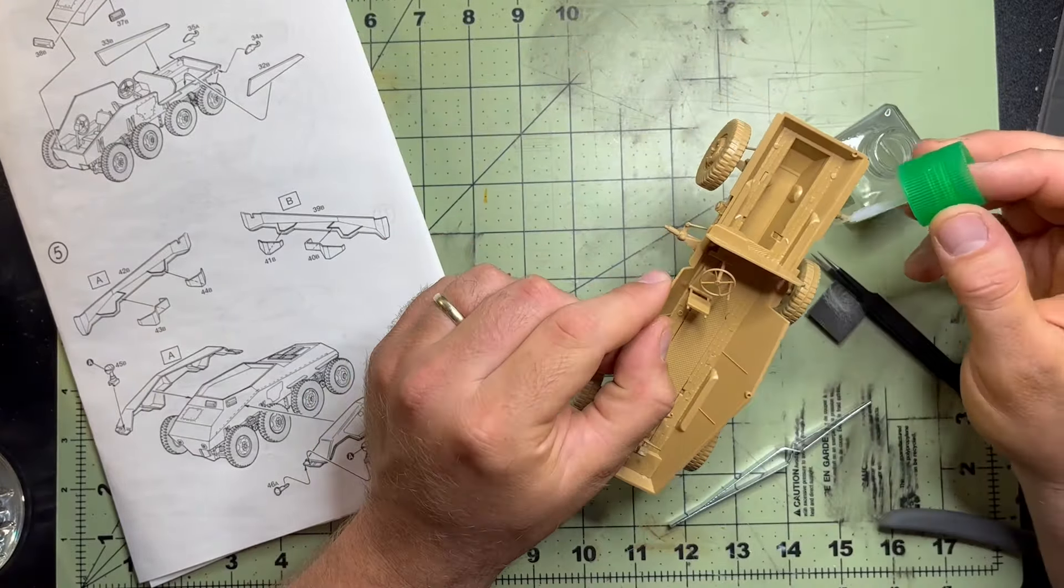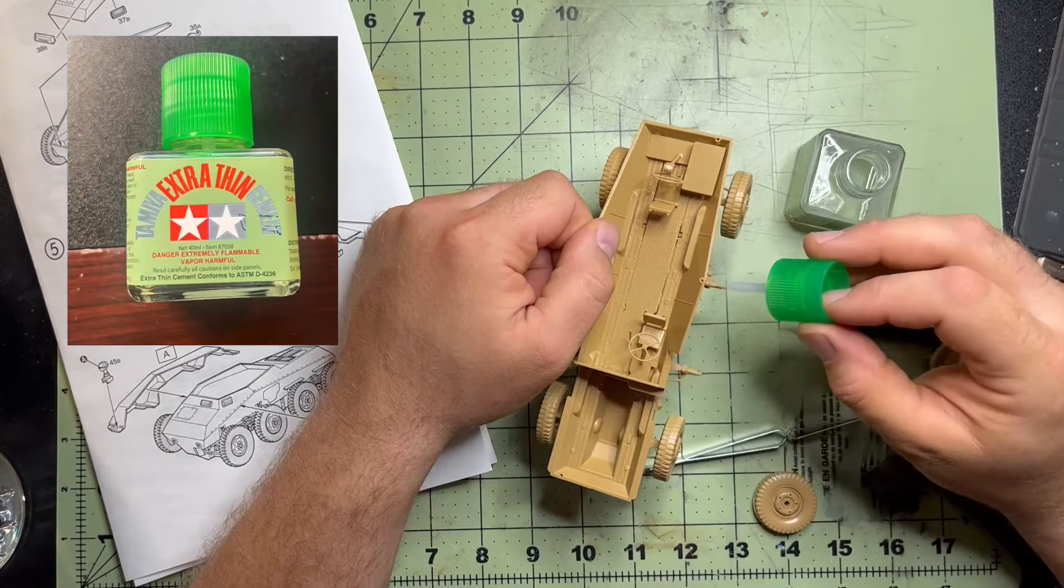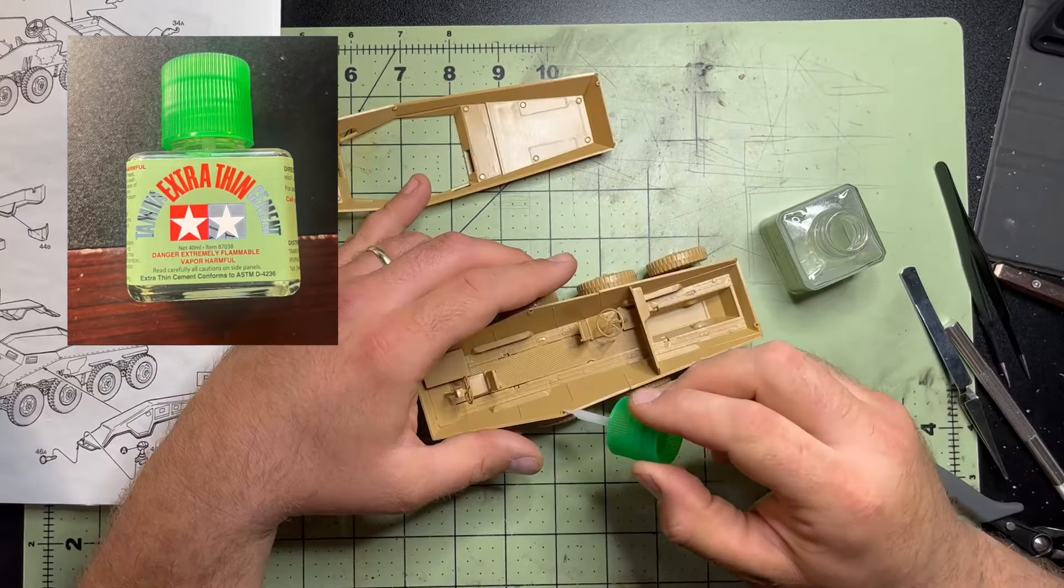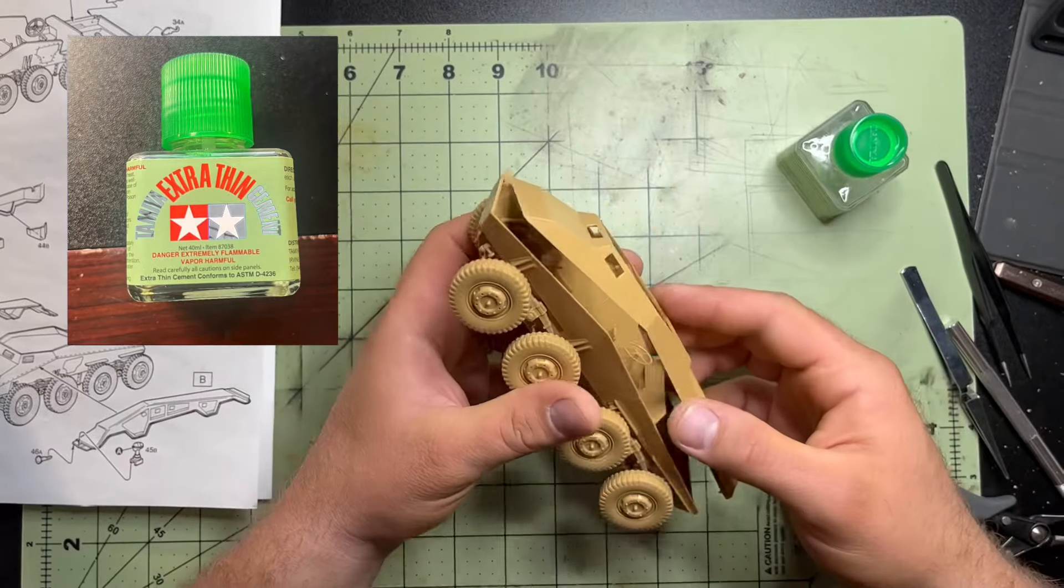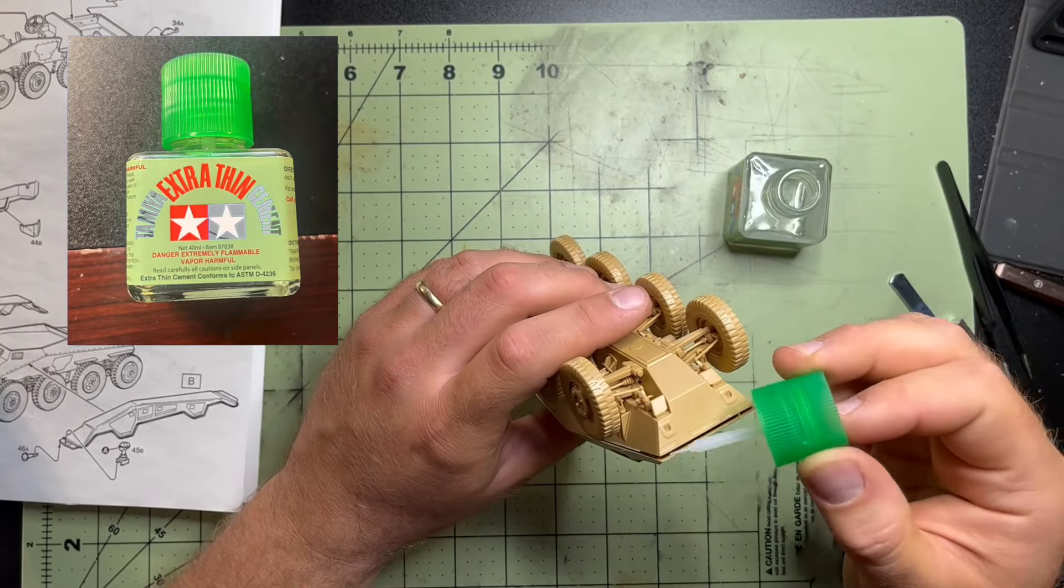I don't know what everyone's thoughts are on modeling cement, but I have always preferred the Tamiya Extra Thin Cement. I know there's a lot of different brands out there and there's thicker stuff and stuff in tubes. But I've always preferred, at least as an adult, the Tamiya Extra Thin Cement.